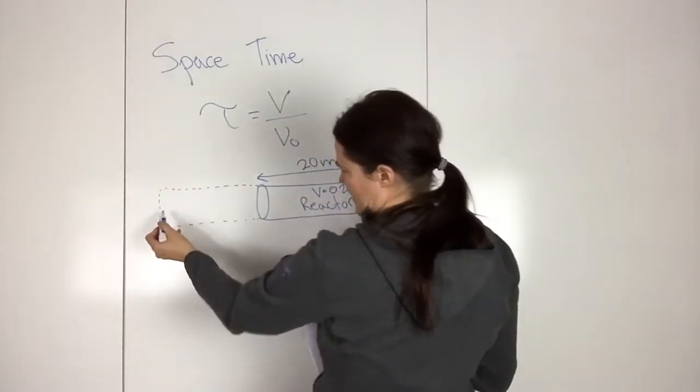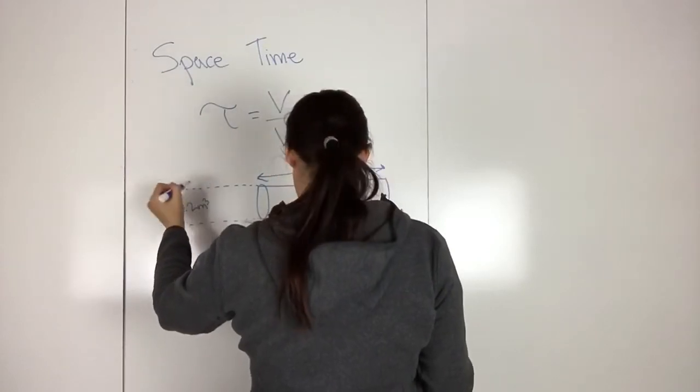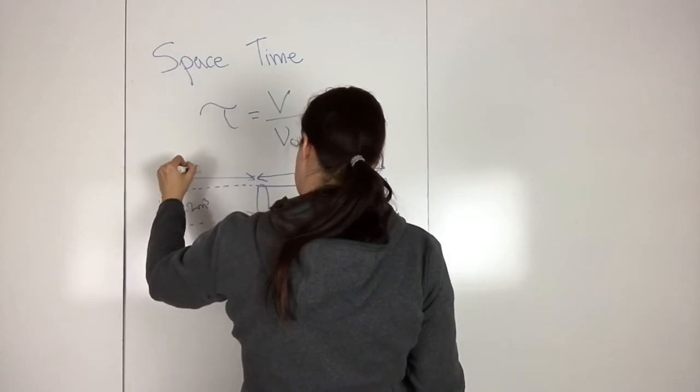Then this fluid that's flowing in, say this is also 0.2 meters cubed, so this is the same length.